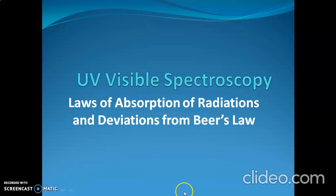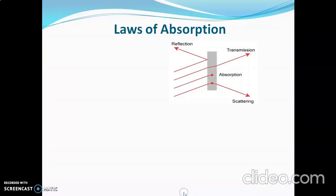In this video I will explain laws of absorption of radiations and deviations from Beer's law. When radiations are passing through a semi-transparent medium, some radiations will get reflected, some will get scattered, and some amount of radiation will get absorbed by the sample, and the remaining radiations will be transmitted through the sample.